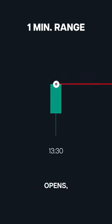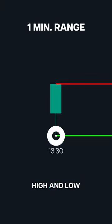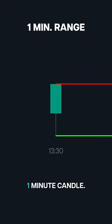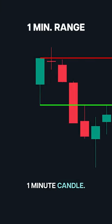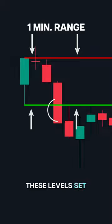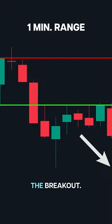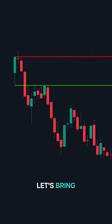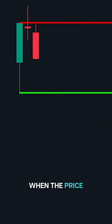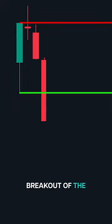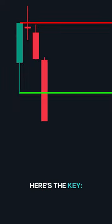Want stronger trade confirmations? Let's combine the trigger point with the one-minute range breakout strategy. When the market opens, mark the high and low of the first one-minute candle — these levels set the stage for the breakout. Now bring in the trigger point: when the price is close to our trigger point, wait for a breakout of the one-minute range.